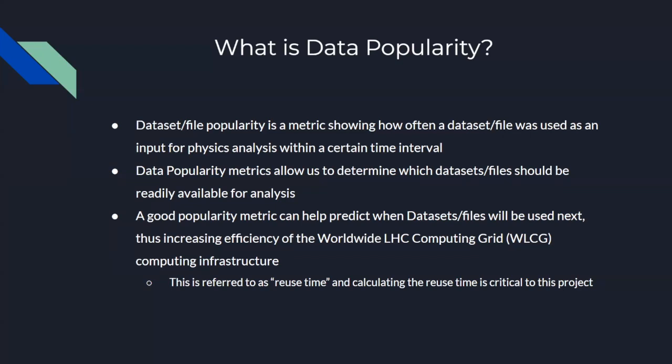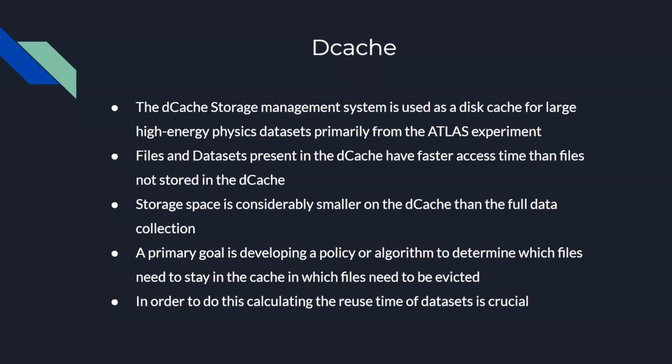This can be really important for our goal, which is to increase optimization for access time. And our end goal is to basically create a neural network, which can determine based off of information of the data sets, how long it takes, or the reuse time for each data set or file. And then we can load them into a thing called a d cache. So a d cache is an intermediate cache between the entire database of Atlas and the user requesting a task. It's much faster, but it's also considerably smaller, which means that we have to prioritize certain data sets over other ones, which means that a primary goal, which you can see right here, is to develop a policy or an algorithm which can help us determine which file should stay in the cache and which files shouldn't be in the cache at a given day, which is why the reuse time is important because if we can calculate an efficient and highly accurate reuse time, then we can know which days we should have certain files and data sets in the d cache and which days they shouldn't be in the d cache.